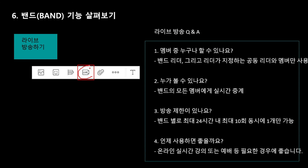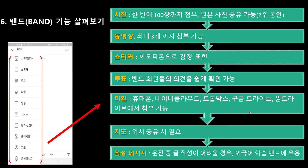라이브 방송하기 메뉴입니다. 이거는 밴드 리더나 리더가 지정하는 공동 리더만 사용이 가능하고요. 밴드의 모든 멤버가 실시간으로 방송을 볼 수 있습니다. 최대 24시간, 10회 동시에 할 수 있다고 하고요. 언제 사용하면 좋느냐 하면 온라인 강의할 때, 예배 등 필요할 경우에 좋습니다. 글쓰기를 했을 때 아래쪽에 보면 사진 한 번에 100장까지 첨부 올릴 수 있습니다. 동영상은 최대 3개까지 한 번에. 스티커, 이모티콘, 투표, 파일, 지도 공유, 음성 메시지 등 운전 중에 말로 눌러서 올릴 수 있습니다.